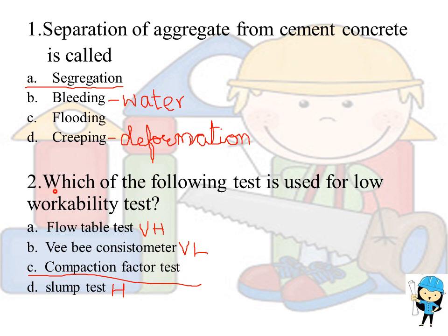The second question is: which of the following tests is used for low workability? The answer is the compaction factor test. Flow table test is used for very high workability. VB consistometer is used for very low workability. Slump cone test is used for high workability.